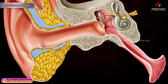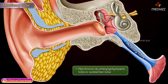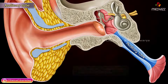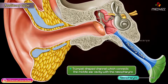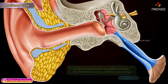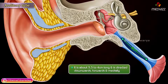Auditory tube. The auditory tube is also known as the pharyngeal tympanic tube or the Eustachian tube. It is a trumpet-shaped channel which connects the middle ear cavity with the nasopharynx. It is about 4 cm long and is directed downwards, forwards, and medially.